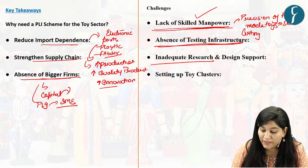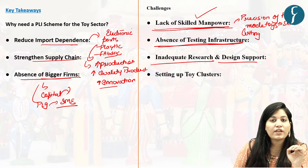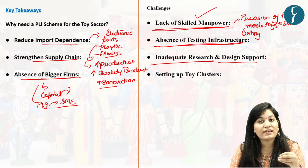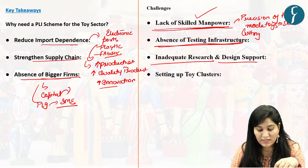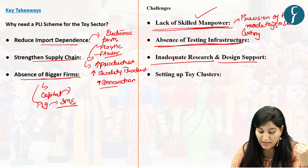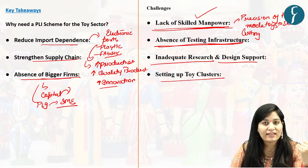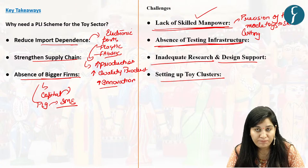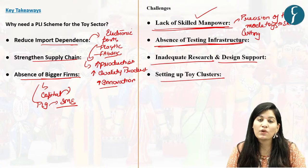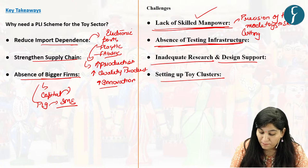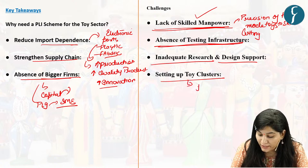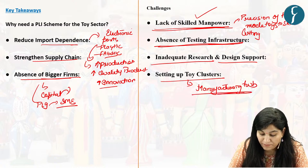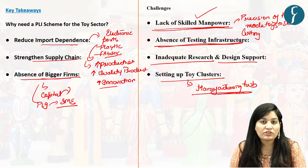Third challenge is inadequate research and design support. This industry could benefit greatly from a network of institutions catering to research and design support, as it would boost quality and ensure stability. Then there is the need for setting up toy clusters. By establishing concentrated regions of toy manufacturing, we can bring down production costs, increase production, and these clusters have the potential to become large-scale manufacturing hubs if we provide the necessary infrastructure and support systems.